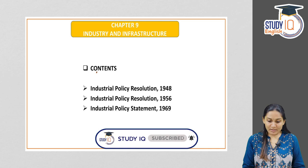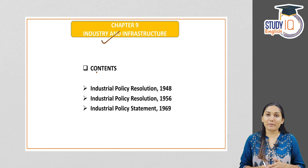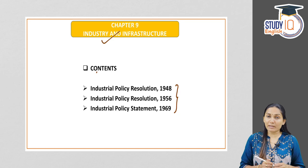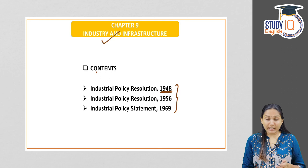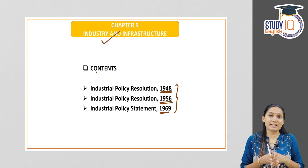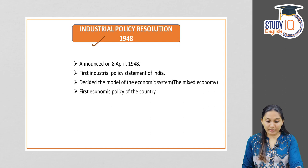Hello everyone and welcome to Study IQ English. I am Joy. In this video we are going to start a new module on Industry and Infrastructure. This is chapter 9 from Ramesh Singh for Indian Economy. Today we will be discussing three major industrial policies of India: the Industrial Policy Resolution of 1948, IPR of 1956, and the Industrial Policy Statement of 1969.